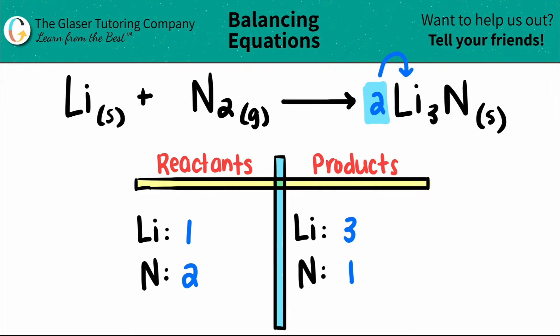For the lithium, two times three now is a total of six. And then, just like we did, two times one is what we wanted, so I have two nitrogen.